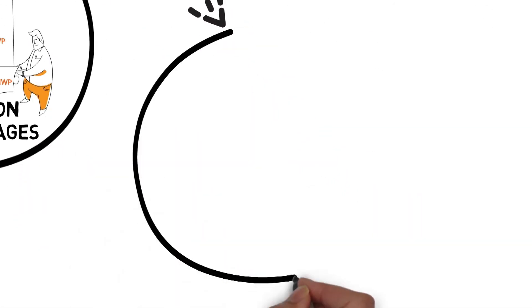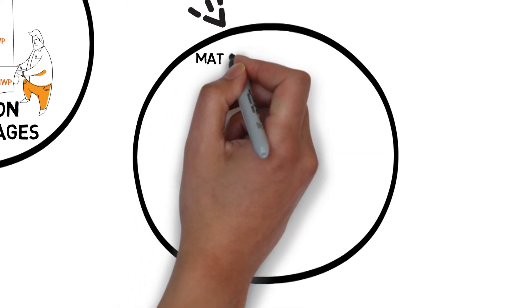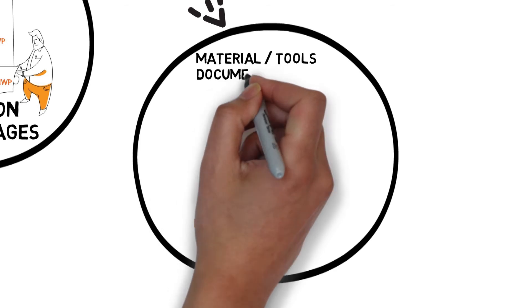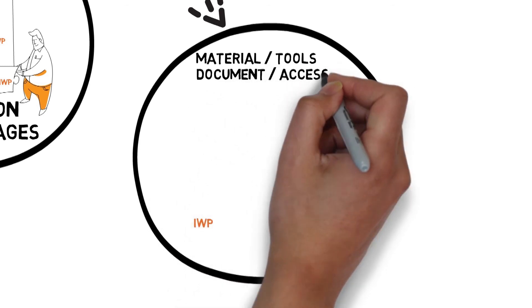As IWPs enter the 3-week look ahead, the on-site material team bag and tag components so that they are staged and ready to ship, and the scaffold team erect scaffolds to provide access.